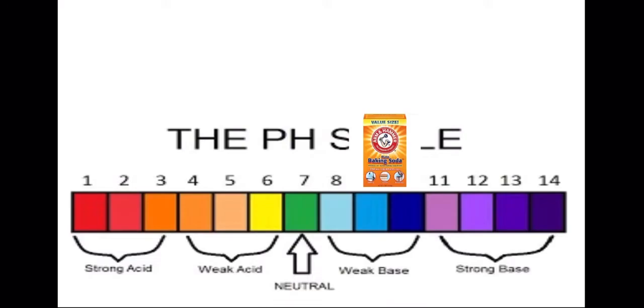So, baking soda maxes out at about 9.5 on the pH scale, as we see. And on the other hand, lye, which is very acidic, maxes out at 14, which is the maximum you can get on the pH scale, which is pretty high, pretty acidic.